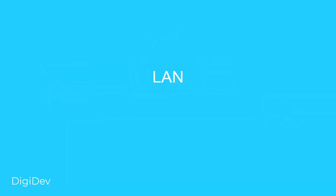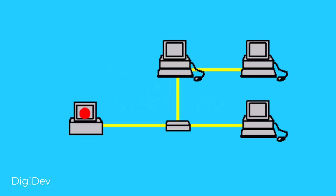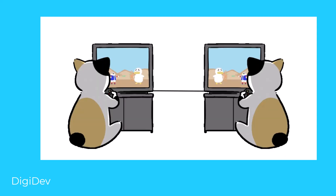The next one is LAN, which stands for Local Area Network. LAN can contain a few computers or servers that are connected together with cables. The example for it is when you and your friend connect your laptops together and play a video game on your local machines together.